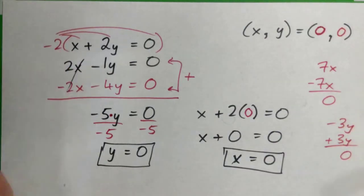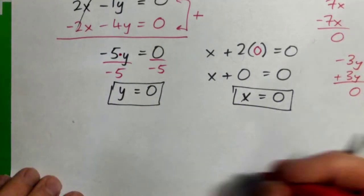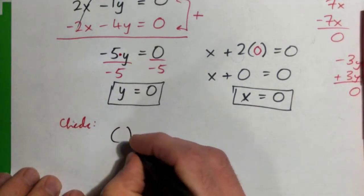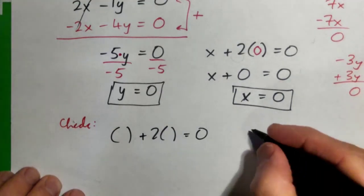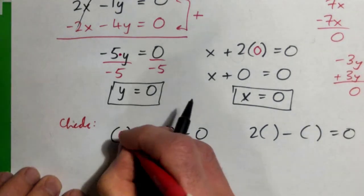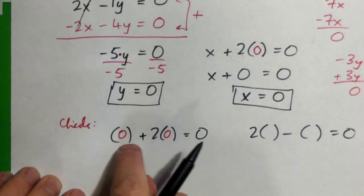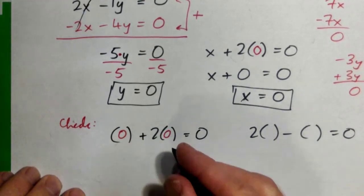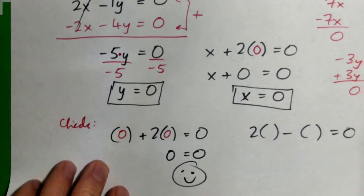If we were to check it, I'm just going to do this real quick. The equations are x plus 2y equals 0, and the other equation was 2x minus y equals 0. When I plug (0, 0) in for x and y, it should work out. Look, 0 plus 2 times 0, what does this make? 0 equals 0. That's fine, smiley face.